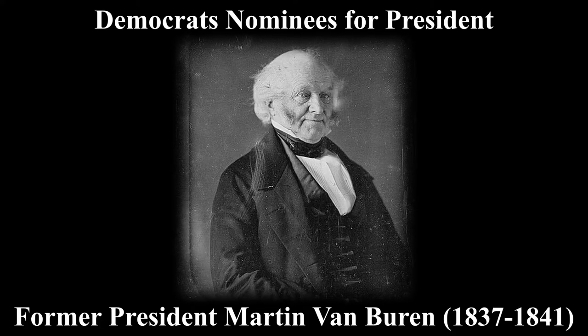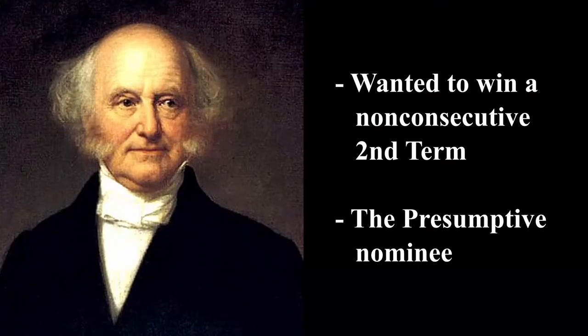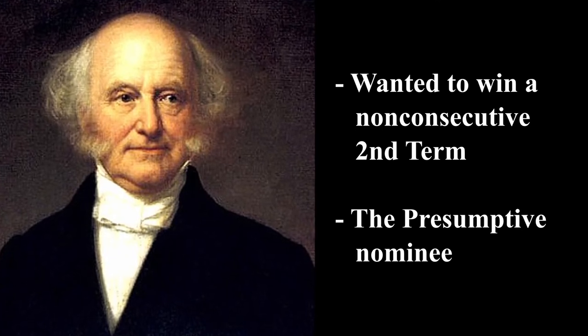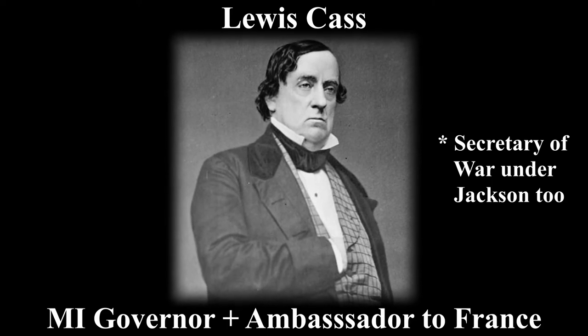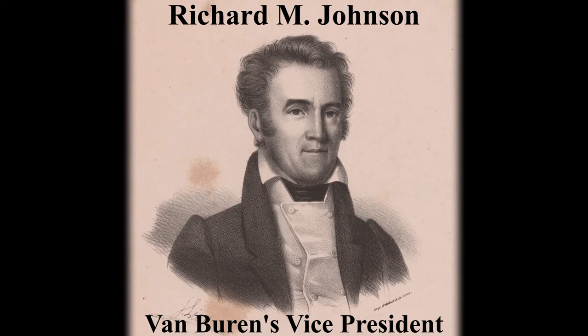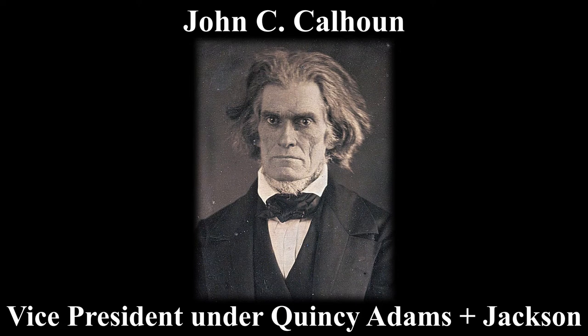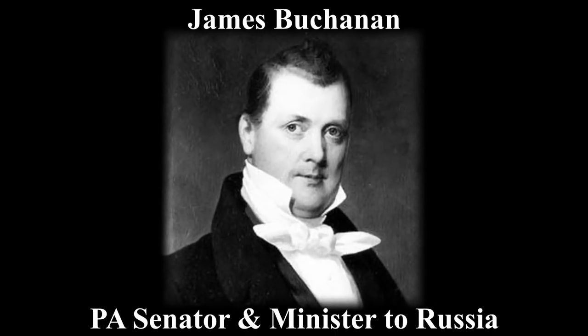For the election there were a handful of nominees for president. Mainly former president Martin Van Buren, who wanted to win a non-consecutive second term and many saw him as the most likely winner at the start of the convention. Another nominee was Louis Cass, Michigan Governor and Ambassador to France. Richard Mentor Johnson, Van Buren's Vice President from Kentucky. John C. Calhoun from South Carolina, Vice President under Quincy and Jackson — fun fact, Quincy Adams was still working as a House Rep. Lastly, James Buchanan, Pennsylvania Senator and Minister to Russia.